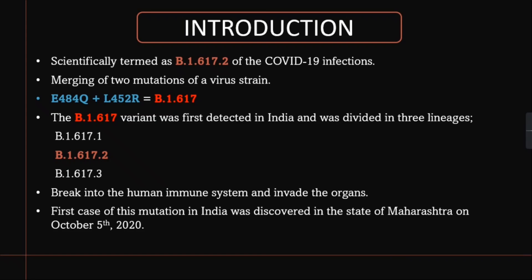Researchers and developers of the virology department have scientifically termed this Delta variant as B.1.617.2 of the COVID-19 infections.